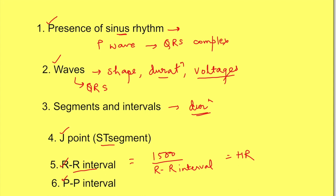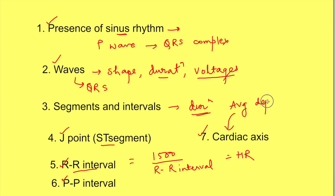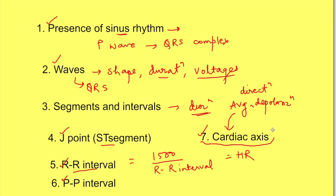Finally, look at the cardiac axis, which represents the average direction of depolarization of the heart in one impulse. How much is normal cardiac axis, how to calculate it, and shortcuts for knowing the cardiac axis will be covered in another video. Thank you for watching, and don't forget to like the video and subscribe to Physiology Open.